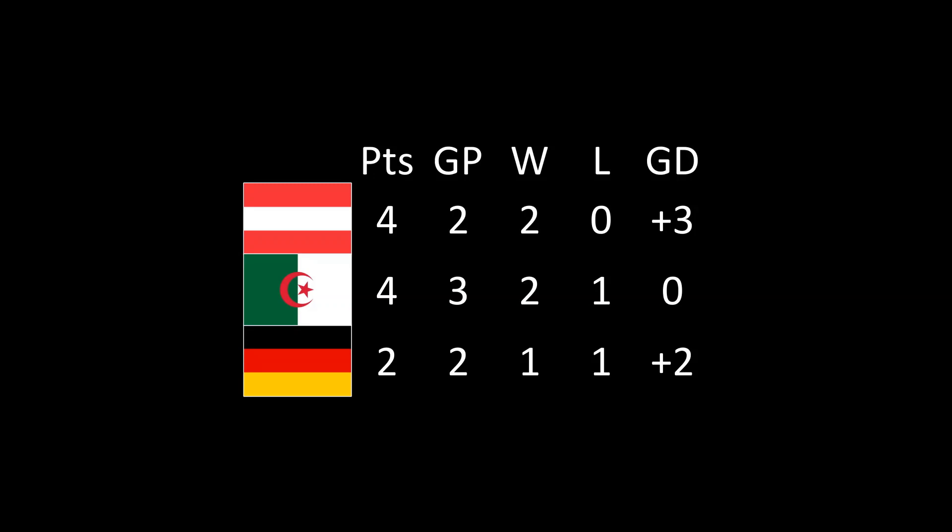You'll notice, if you look closely at the standings, that those two countries had incentive to work together. If West Germany were victorious by one or two goals, both teams would advance to the next round — they would both finish with two wins and a positive goal differential, which was the tiebreaker over Algeria. Given that, what happened next was obvious: West Germany scored within the first 10 minutes, and for the remaining 80 minutes of the game, they simply passed the ball back and forth.